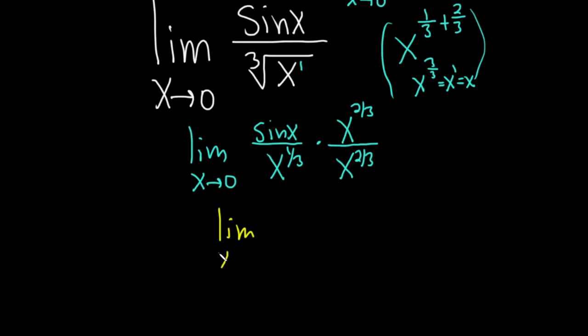This is the limit as x approaches zero. And I'm going to go ahead and put this in the front. This is x to the two thirds times, and then this times this is going to be x. So let's write it like this, sine x over x.